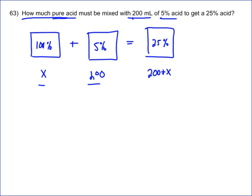Now that I've set up my chart, the way to solve it is just to multiply down. 100% times x, we turn the 100% to a decimal, which is 1. So that gets me x plus 5%, which is 0.05, times 200, equals 25%, so 0.25, times 200 plus x.